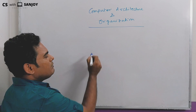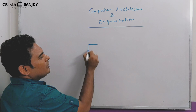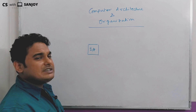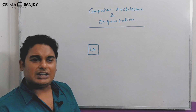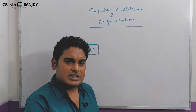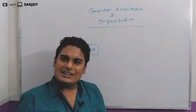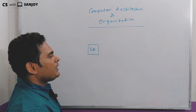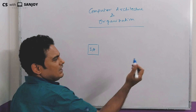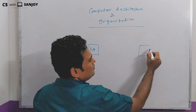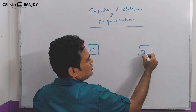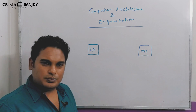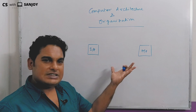The basic components of a computer include the input device. These are the input devices. Another basic aspect of the computer is the output device. These are the basic devices.